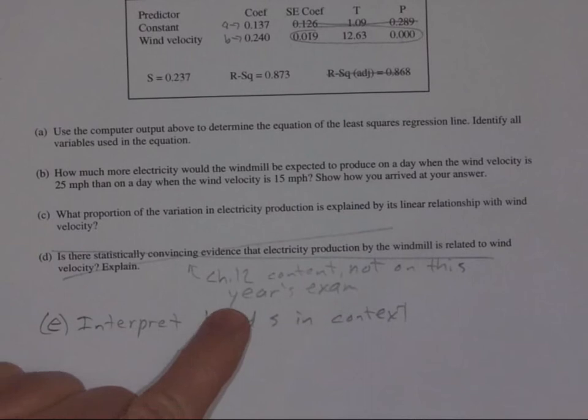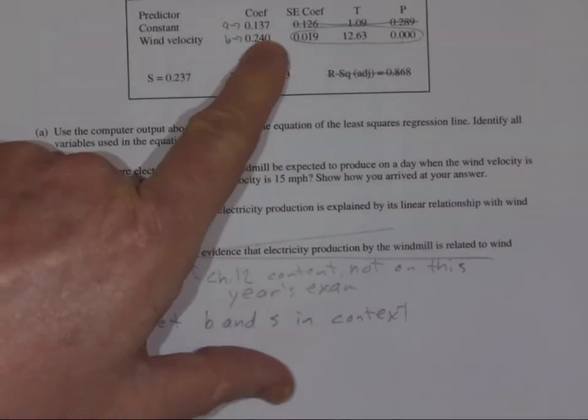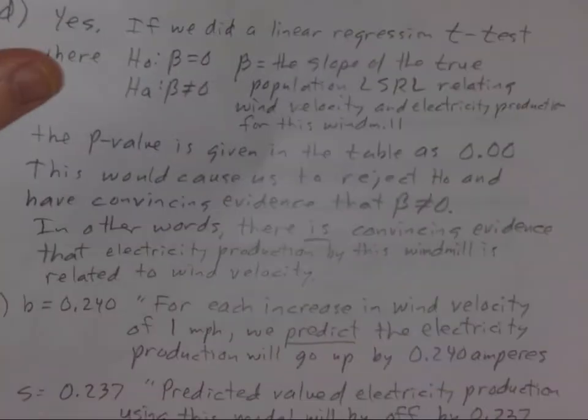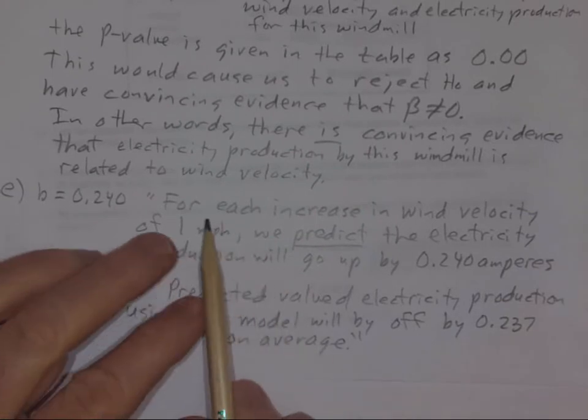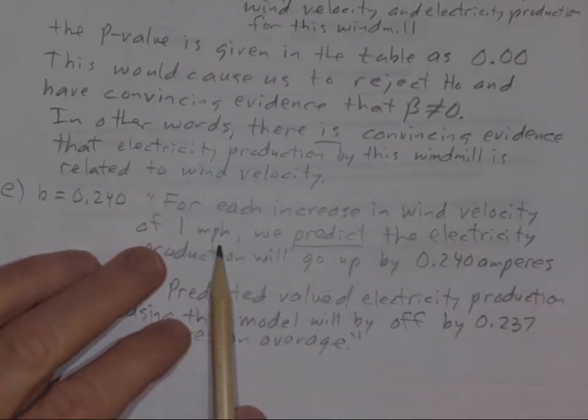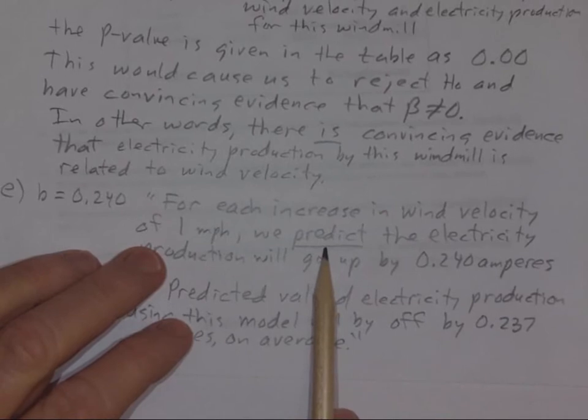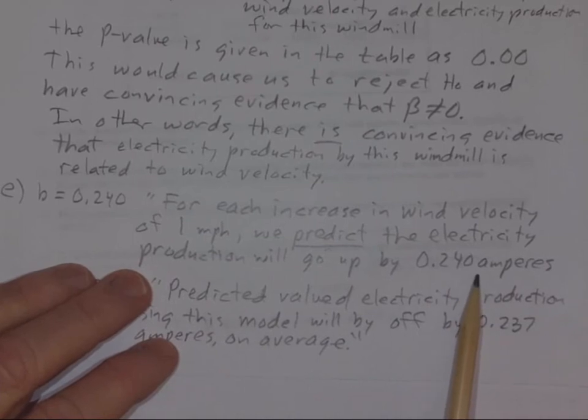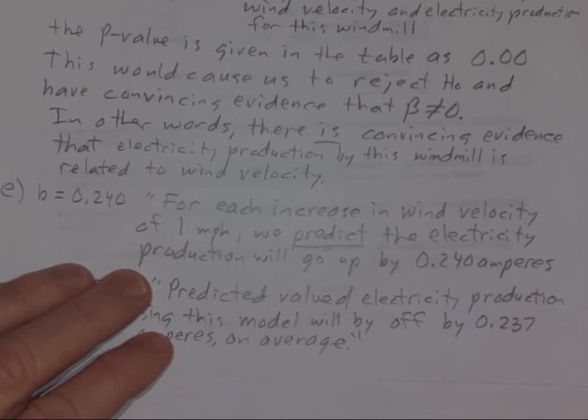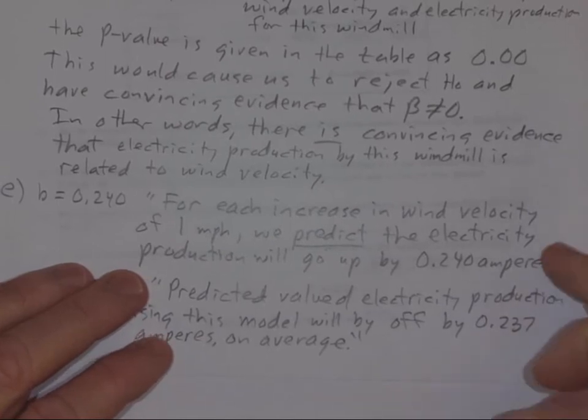And then the slope and S in context. There's the slope, there's B, and there's S in context. That is very important to be able to say this year. The slope is the amount that we predict Y is going to go up if X goes up by one. But we're not going to say X and Y, we're going to say the variable. So we would say for each increase in wind velocity of one mile per hour, we predict, it's important to say that we predict or we expect, the electricity production to go up by 0.24 amperes. That is the way you say that. That is a very popular question in the AP stats exam. I think there's a really good chance it'll be on there so you need to be able to say that.